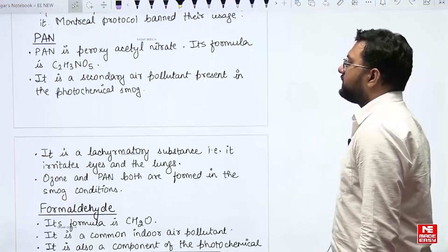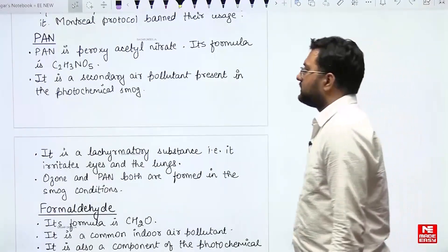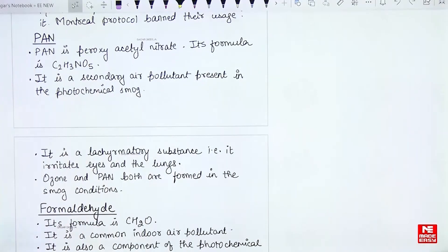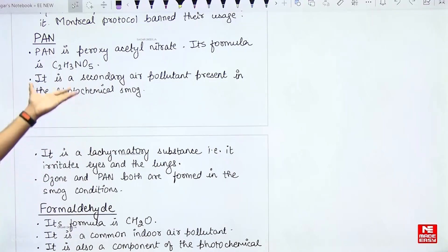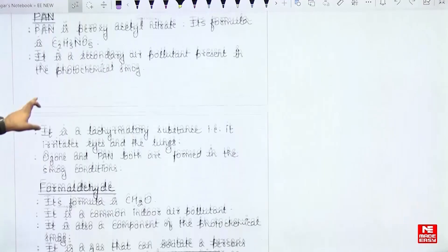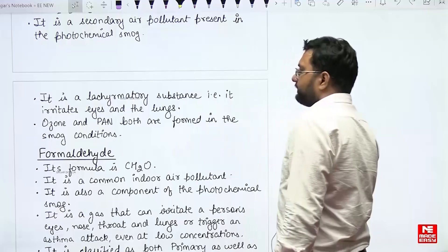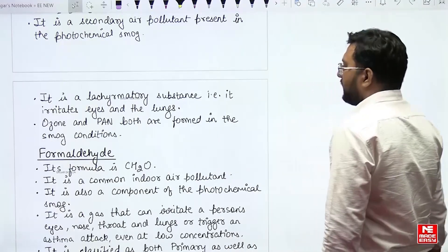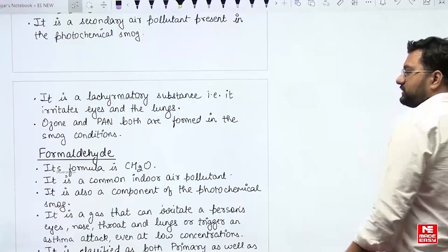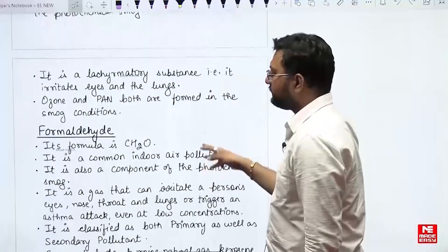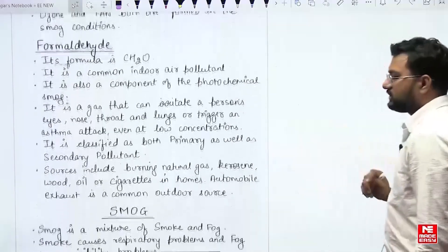PAN (peroxyacetyl nitrate) has the formula C2H3NO5. It is a secondary air pollutant present in photochemical smog. It is a lachrymatory substance — it irritates the eyes and lungs. Both ozone and PAN are formed under smog conditions.